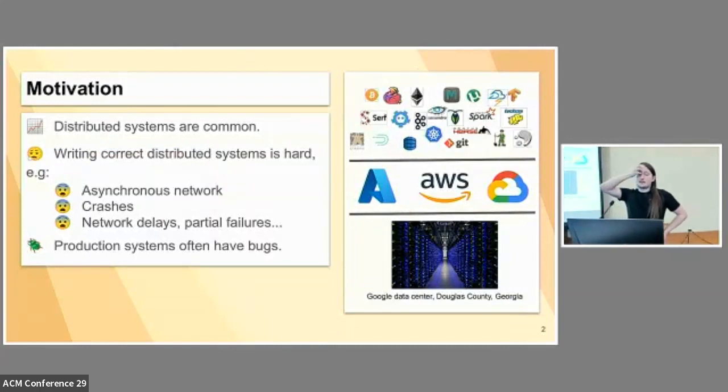You can have an asynchronous network, which is counterintuitive. You can have crashes in various places. You can have delays. If half of your system crashes, then the rest of it might still be there wondering what happened. Generally, these are all things that can happen in production systems and cause all kinds of havoc.